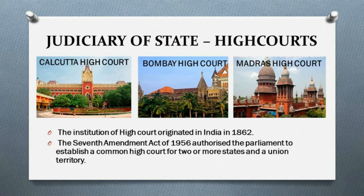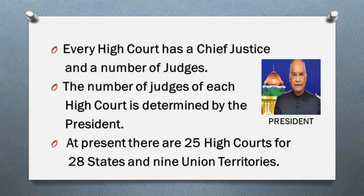Judiciary of the state — high courts: the institution of high courts originated in India in 1862 when high courts were set up at Calcutta, Bombay, and Madras. After 1950, each province's high court became the high court for the corresponding state. The high court is the highest court at state level. The constitution provides a high court for each state; the Seventh Amendment Act of 1956 authorized parliament to establish a common high court for two or more states. Every high court has a chief justice and a number of judges determined by the president. At present there are 25 high courts for 28 states and 9 union territories.